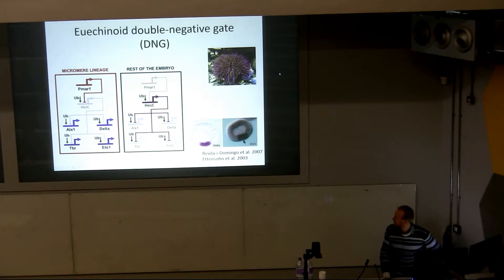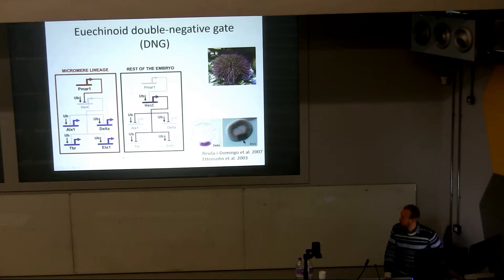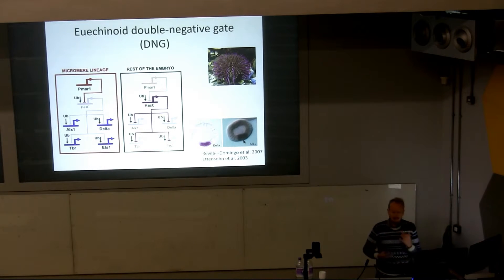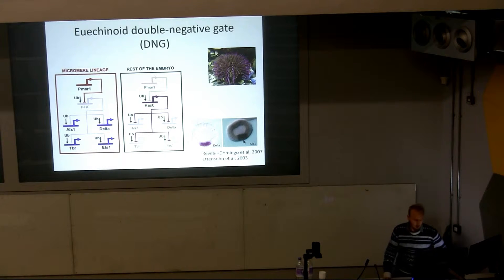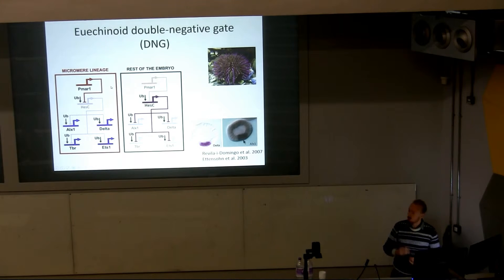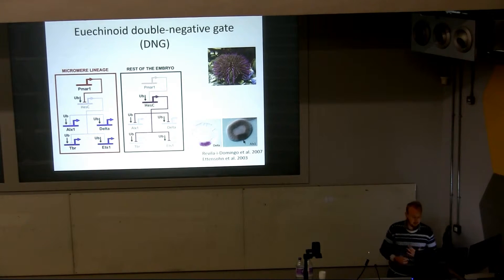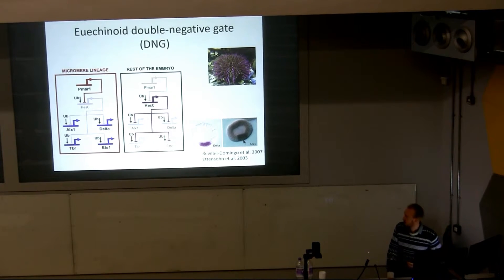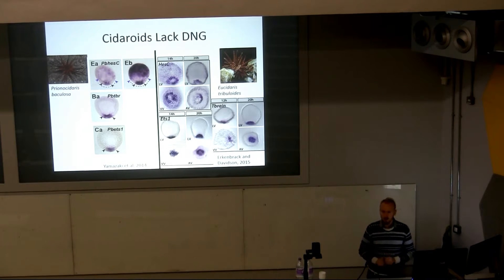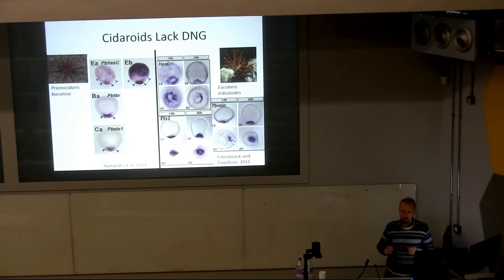Even later in development, we get expression of numerous downstream genes in those cells where PMR1 was expressed—this is a double repression mechanism. We have a repressor, PMR1, repressing another repressor, HES-C. Because of that, you get the genes downstream of HES-C being expressed later in development. This is how euechinoids form their primary mesenchymal cells, which make the skeleton.